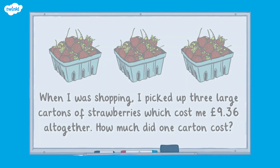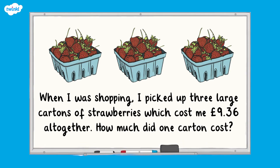Now let's take a look at how we might use this method to solve a shopping problem. When I was shopping, I picked up three large cartons of strawberries which cost me £9.36 altogether. How much did one carton cost? To find out, we would need to divide the total cost by the number of cartons — in this case, £9.36 divided by 3.